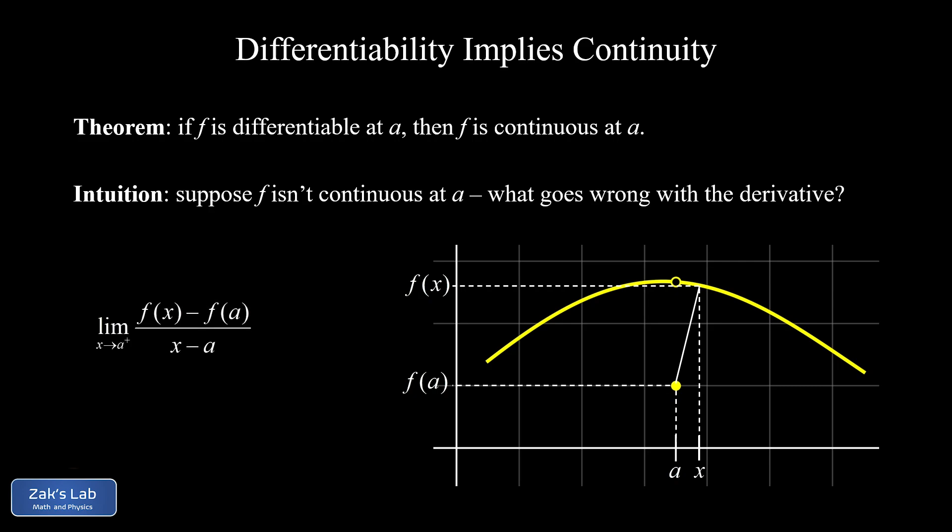Algebraically, we're computing the limit as x goes to a from the right of f of x minus f of a divided by x minus a. Because of this discontinuity, the difference in y-coordinates is going to be finite. So this is no longer a zero-over-zero indeterminate form like we're used to dealing with when we take derivatives of well-behaved functions. The numerator is finite while the denominator shrinks to zero, and this expression goes to infinity. It's understood that when we say a function is differentiable at x equals a, we mean f prime of a exists and is finite. So this discontinuity gives us an infinite slope, and we say the function is not differentiable at x equals a.